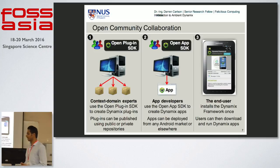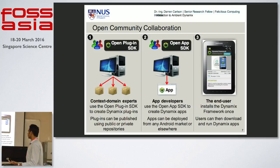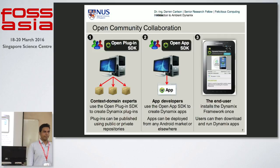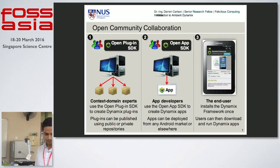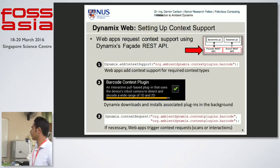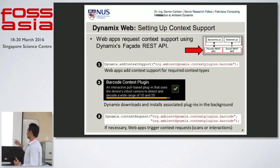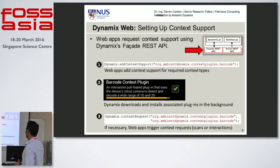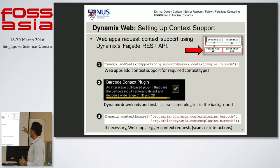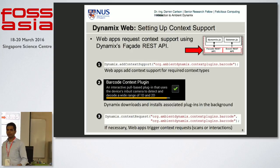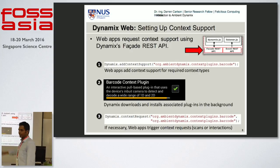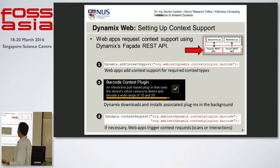To develop plugins, use our SDKs for whatever proprietary device hardware or software you have, and just put it out there — it's all open source. Requesting support for a particular type is as easy as calling Dynamics add context support. For example, we have a barcode scanner plugin — if you want to scan barcodes, you just make that call in your application or web page. Once the user allows it, you make requests to scan barcodes and the camera pops up, returning results to the listener you provided.